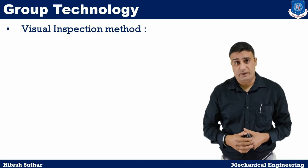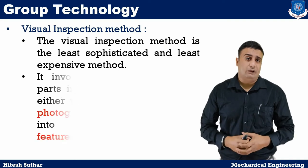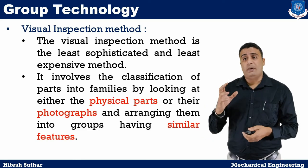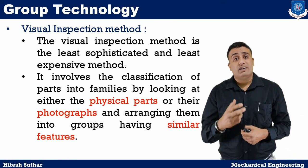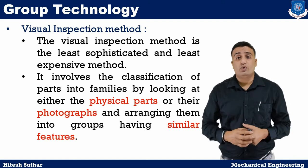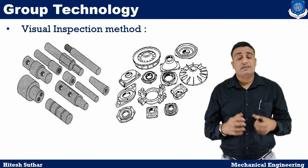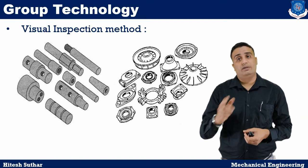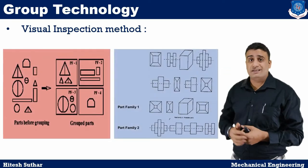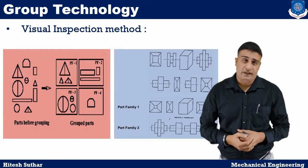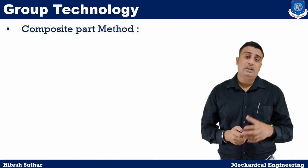The first is the visual inspection method. As the name says, the visual inspection method is the least sophisticated and least expensive method. It involves the classification of parts into families by looking at either the physical parts or their photographs and arranging them into groups having similar features. As we see in the figure, similar shape or drawing components are arranged in a similar group. Although this method is generally considered to be the least accurate method among the other methods.